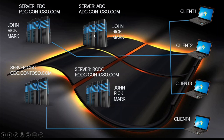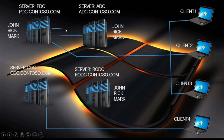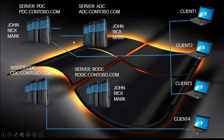There is another computer: ADC — ADC.contoso.com. ADC is just the name of the computer given at installation time. You can see the replication between these computers — this is the two-way replication. These arrows show the two-way replication. If there are users John, Rick, and Mark on the PDC, these users will be replicated to the ADC. And if we create another user on the ADC, that user will also replicate from ADC to PDC — that is two-way replication.